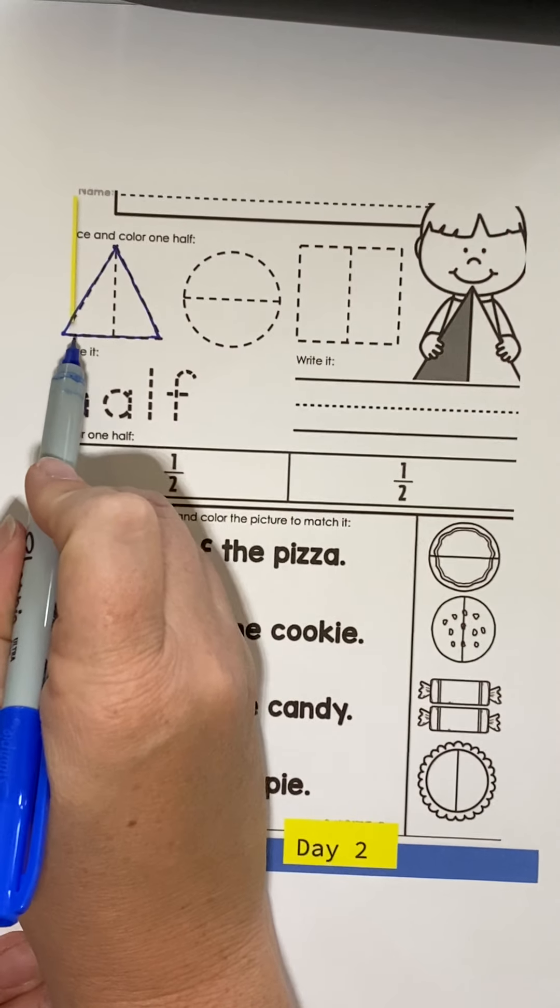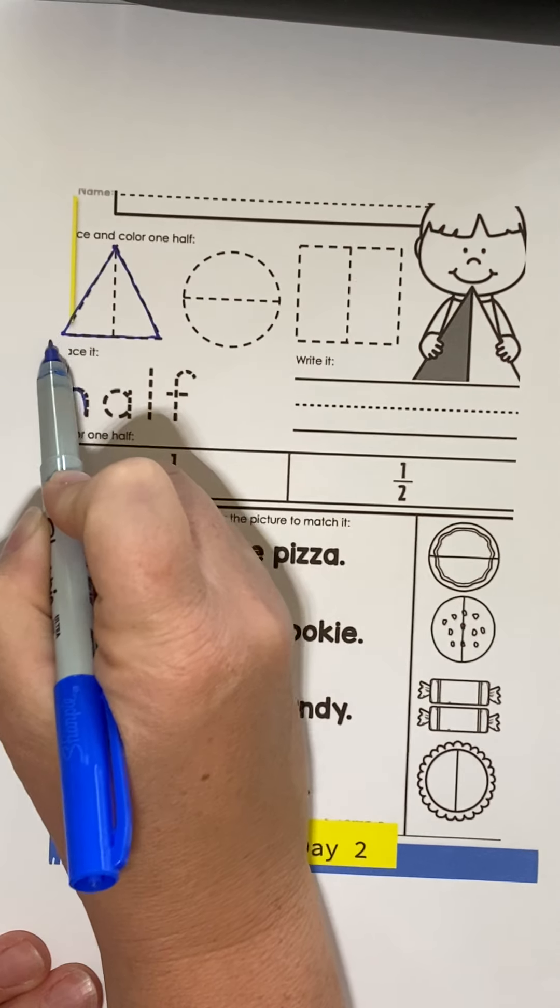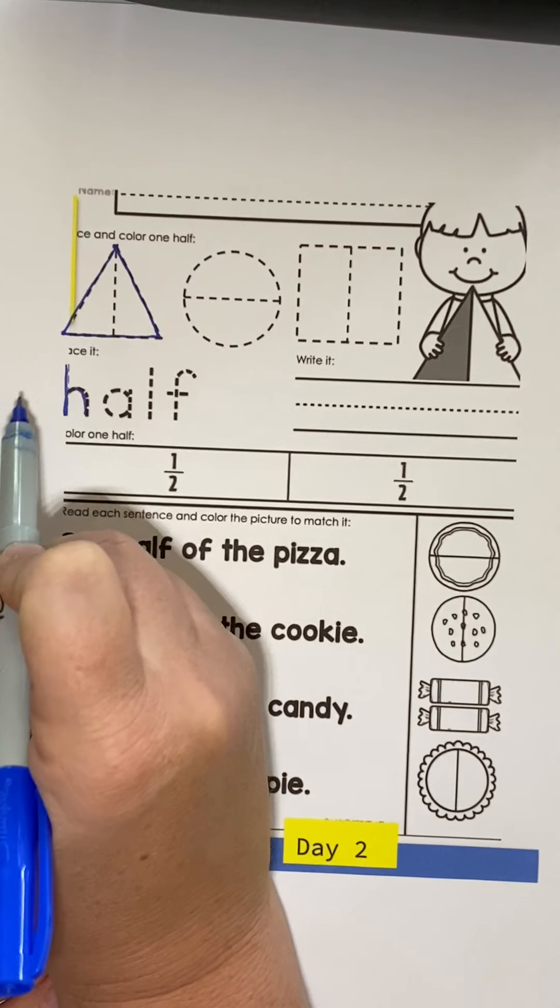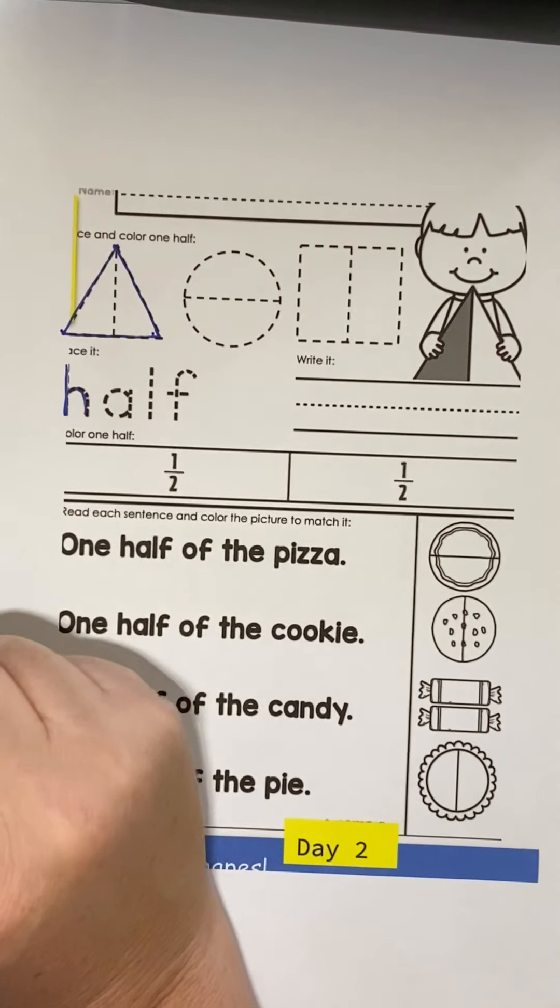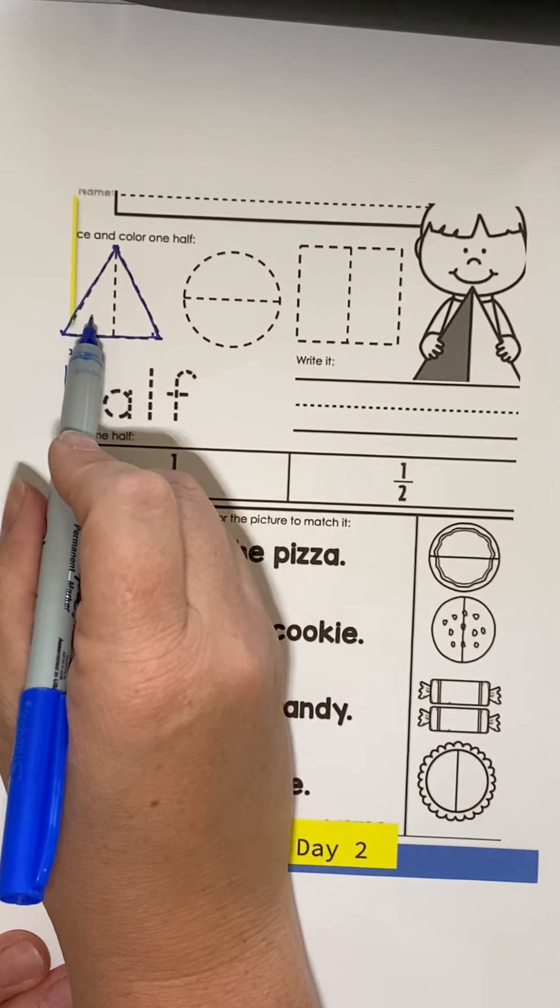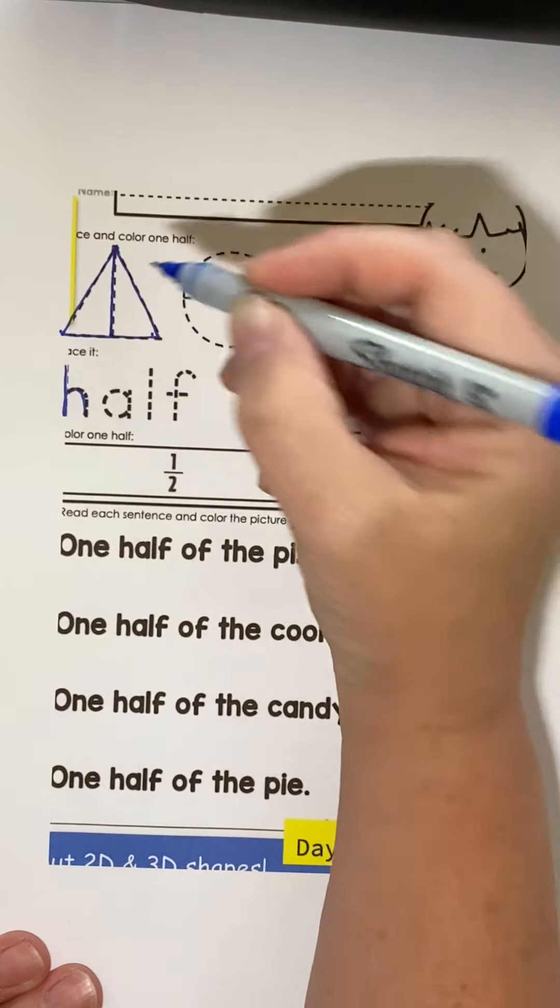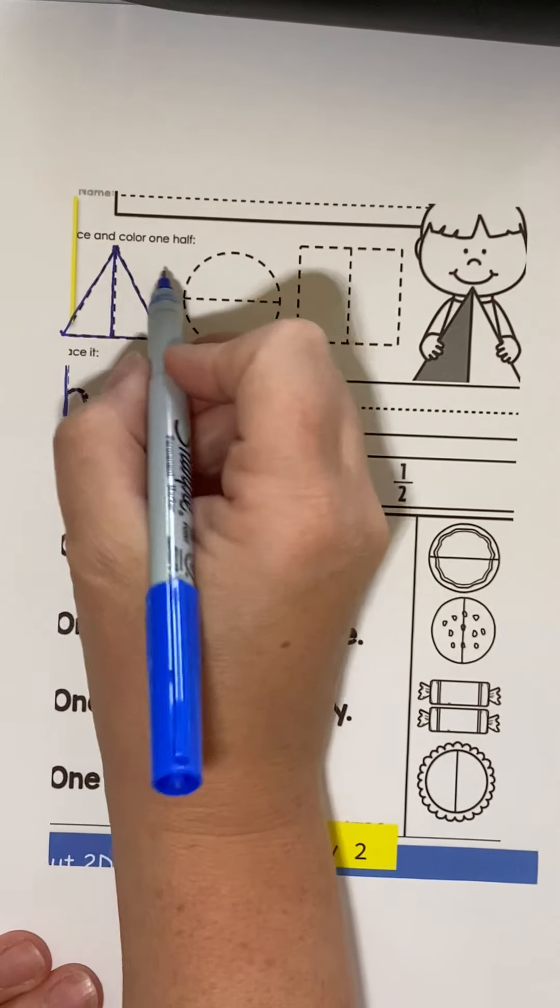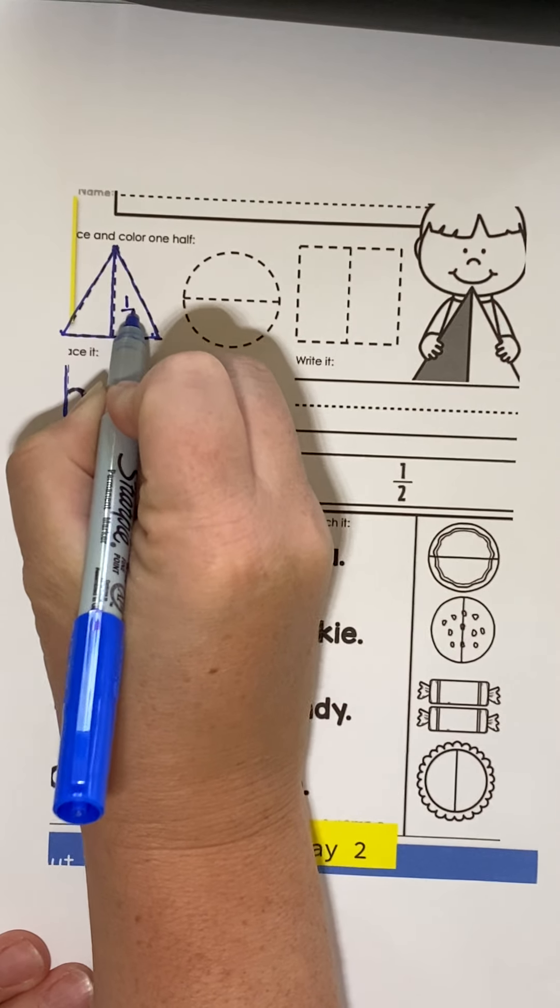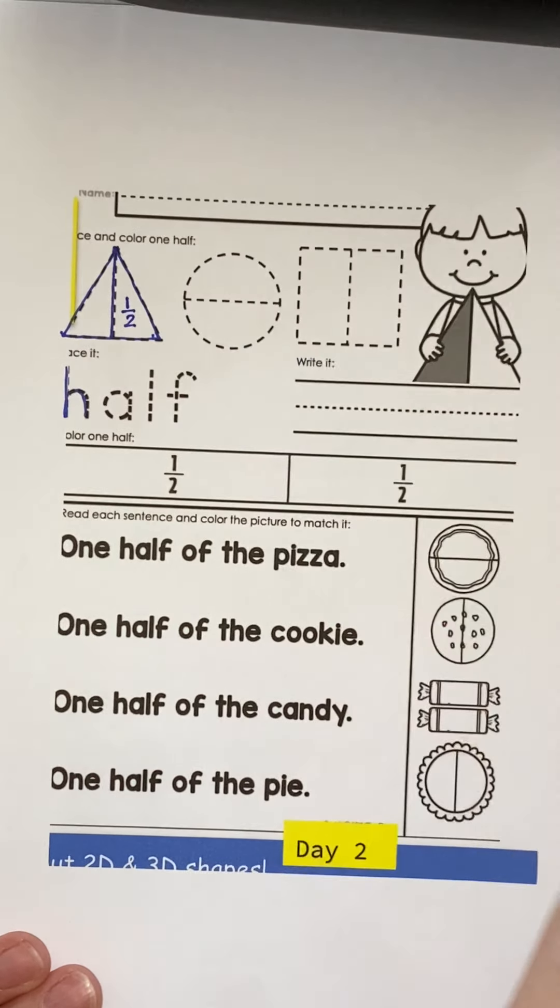Okay, so here we have a triangle. A triangle has one, two, three sides. It has one, two, three corners. If I'm going to make this half, to divide my triangle in half, I can go straight down the middle and make one over two. One half.